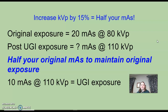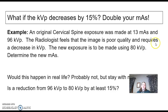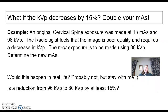We're not looking for exact numbers here. Remember, each machine is different, so you might not have exactly 10 — your number might be 11 or 9, and you've got to use what's closest. What if the KVP decreases by 15%? It's going to be the opposite — you're simply going to double your mAs.